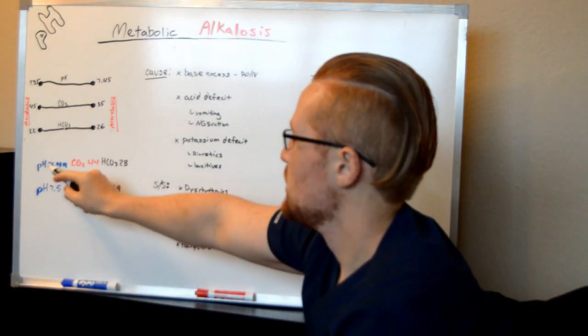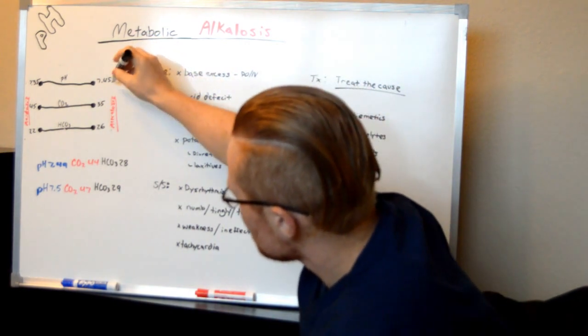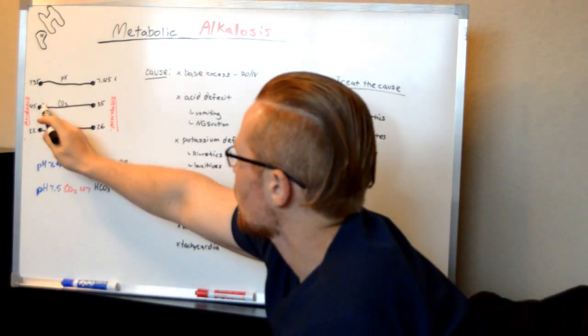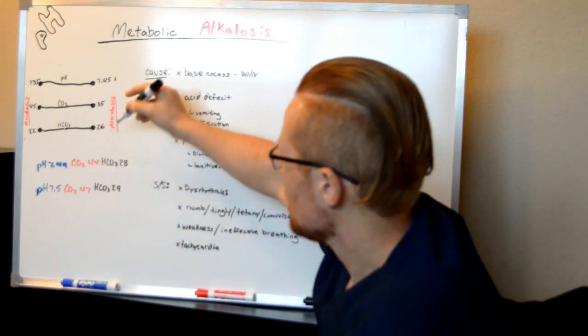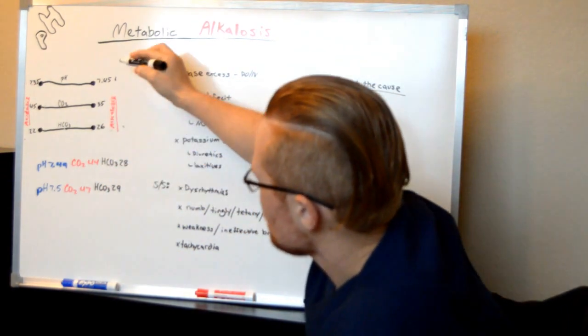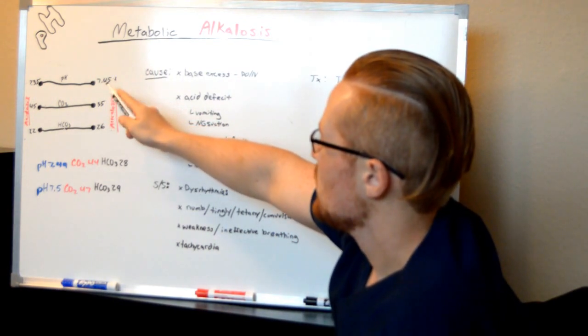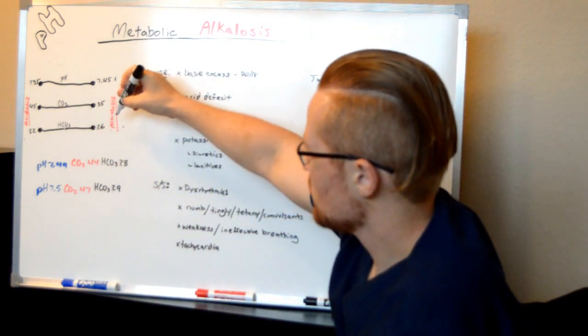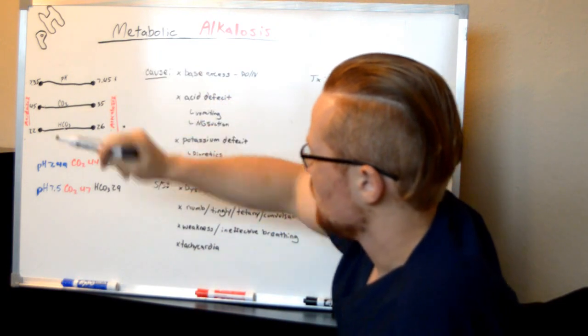Here the patient's pH is 7.49, which is on the alkalosis side. The CO2 is 44, within normal limits, and bicarb is 28. Look first at the pH - the patient is alkalotic. Which coincides with this, the CO2 or the bicarb? You can see the bicarb is also alkalotic, so this is metabolic alkalosis.